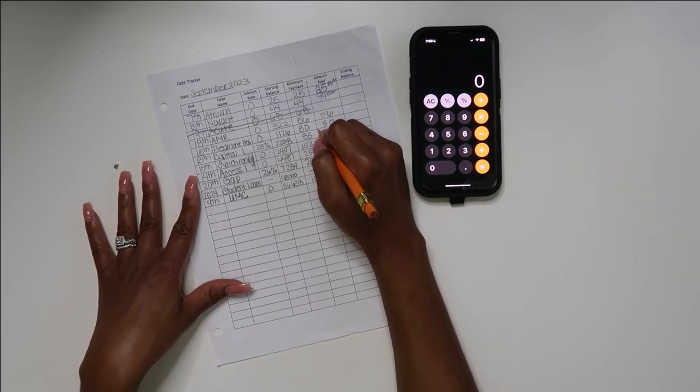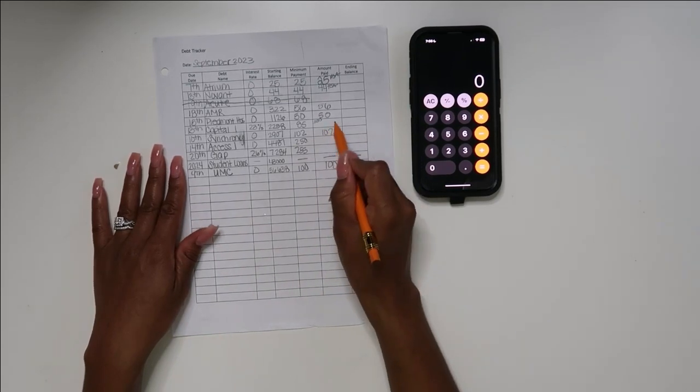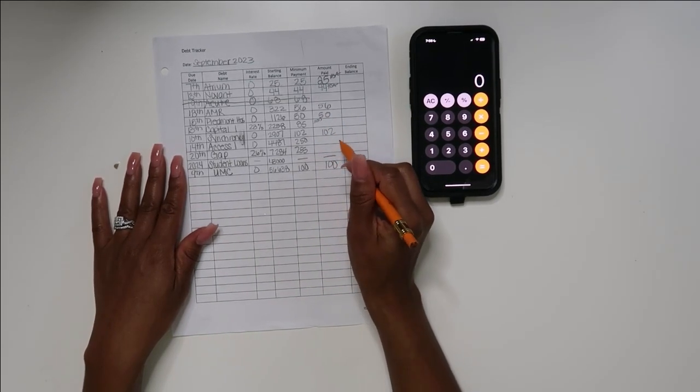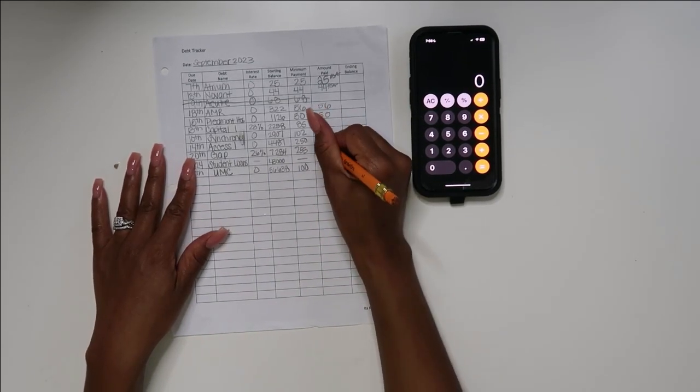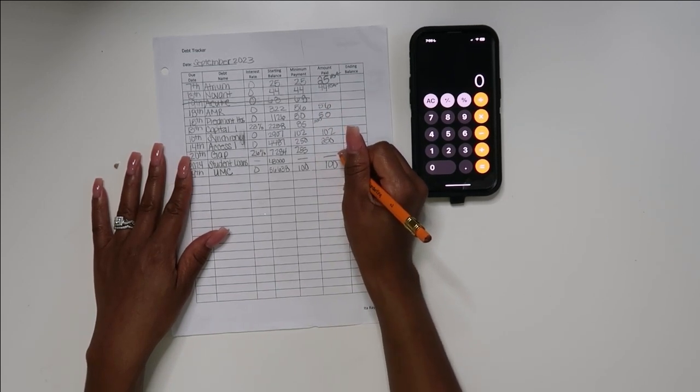Capital One I paid $300 so far. I wanted to pay $600 this month, so $300 so far for Capital One. And then Access One I paid $250.